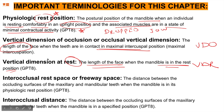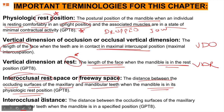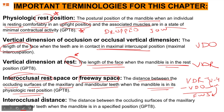At rest position, teeth are not in contact. Interocclusal rest space, also known as freeway space, is the distance between occluding surfaces of the maxillary and mandibular teeth when the mandible is in its physiologic rest position. Basically, if your jaw is dropped, the difference between your VDR and VDO is known as freeway space — generally two to four millimeters. Interocclusal distance is the distance between the occluding surfaces of the mandible when the mandible is in a specified position; it could be freeway space or any other position.